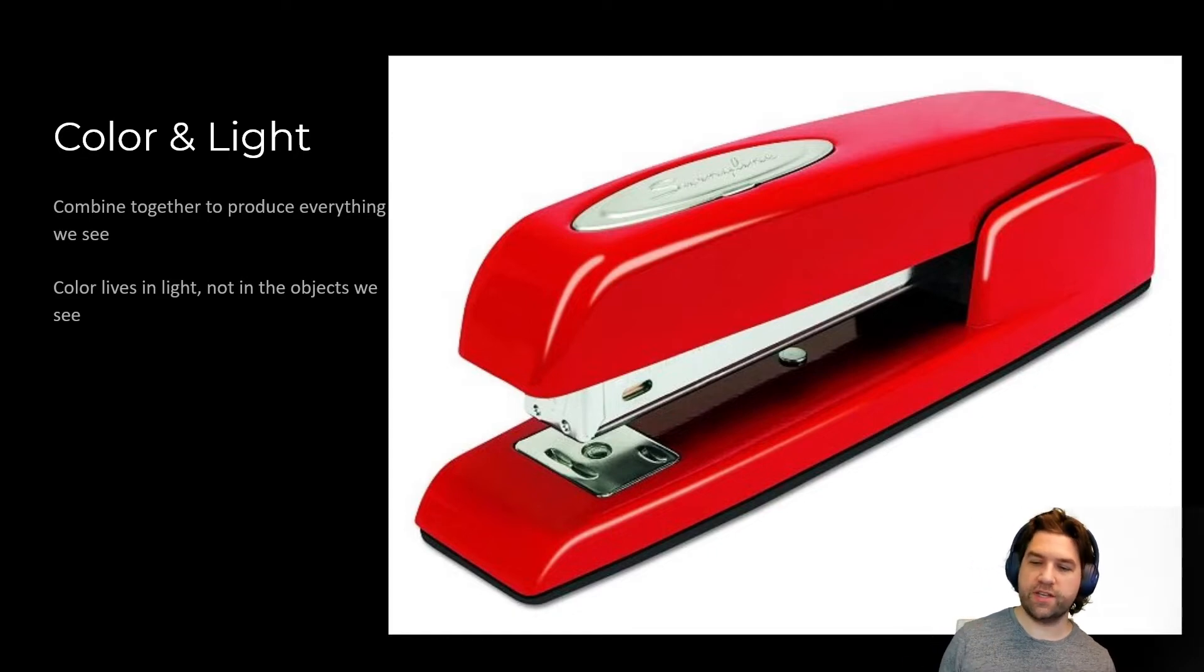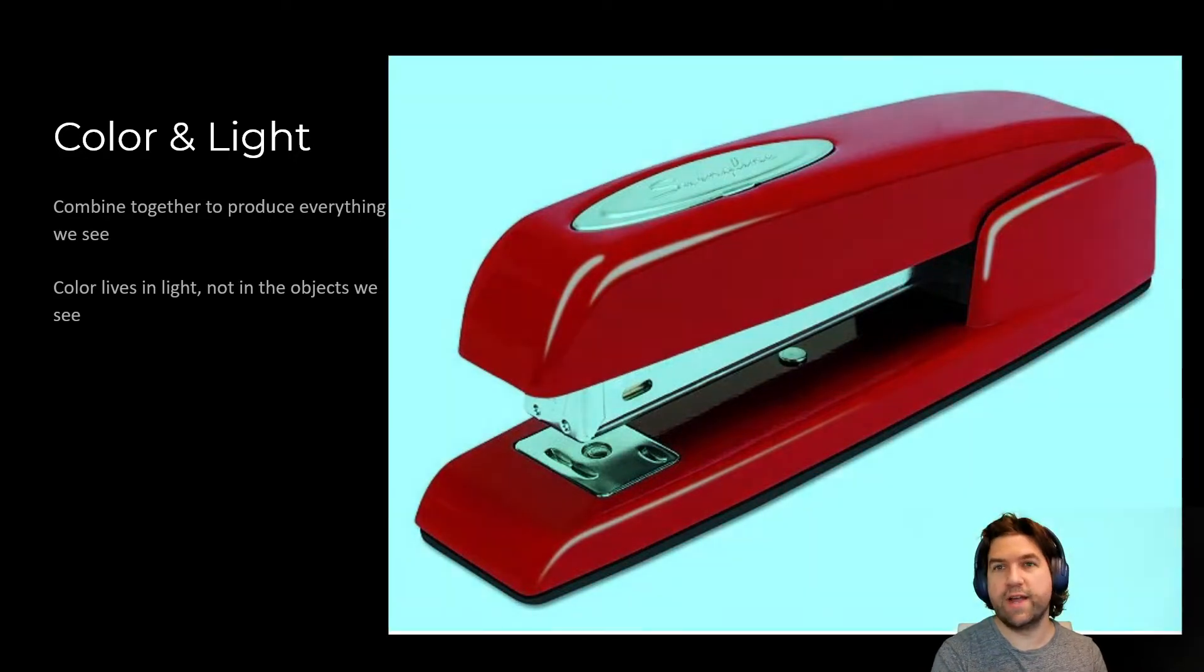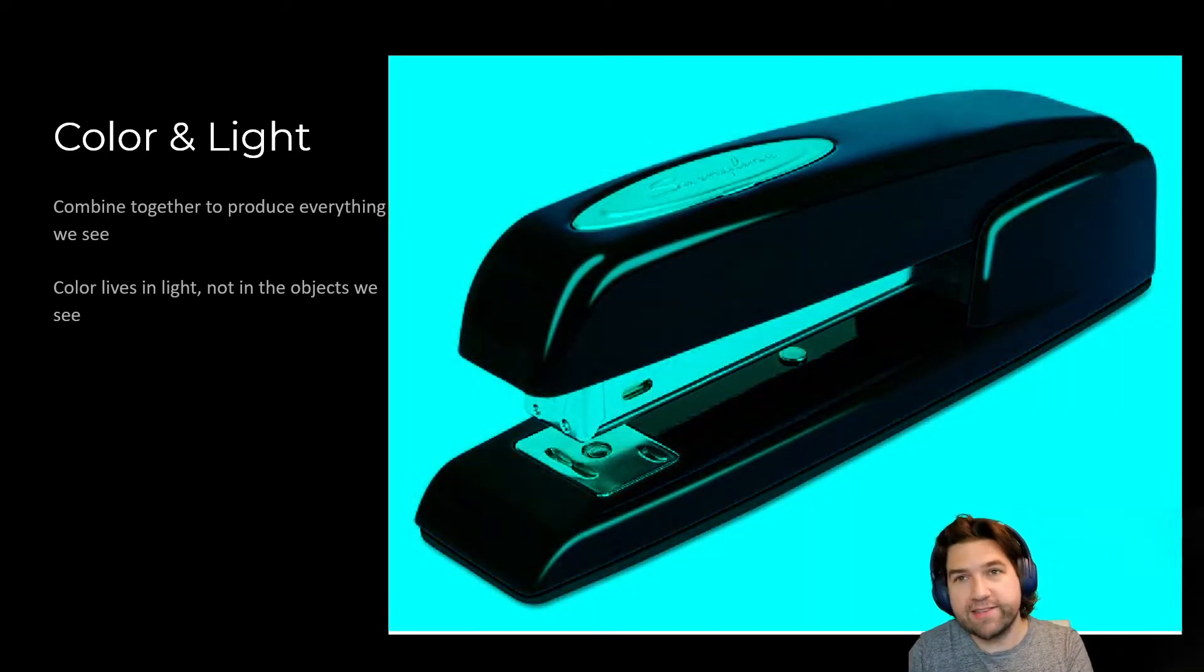If we took a scene like this and we just removed red light from it, it becomes a black stapler. If you were in a room and you shone a light that was this pure aqua blue on it, it wouldn't reflect red at all because there's no red light to reflect.